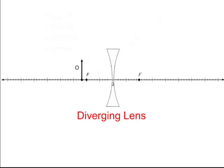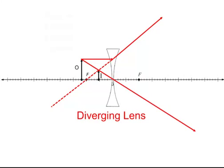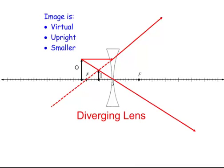For a diverging lens, it doesn't matter whether you're in front of, behind, or at the focal length — they're all the same. The first light ray diverges away at the same angle as the focal length, and the next ray goes through the center. These don't meet on the right-hand side, so we draw dotted lines, and the image meets up in front of the lens. It is always smaller, virtual, and upright for every object position on a diverging lens.